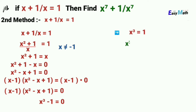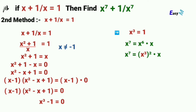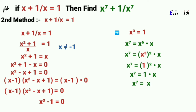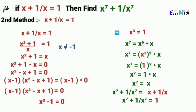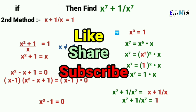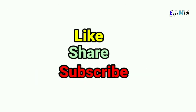Since x to the power 7 is the product of x and x to the power 6, and x to the power 6 is the square of x cubed, and x cubed equals 1, we get x to the power 7 equals x. Therefore x to the power 7 plus 1 over x to the power 7 equals x plus 1 over x, which equals 1. If you like this video, share it with your friends and subscribe to this channel. Thanks for watching. Allah Hafiz.